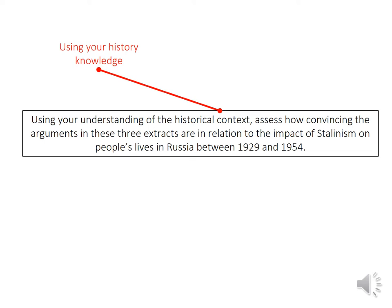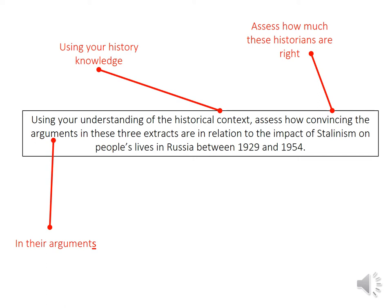When it says 'historical context,' it really means using your historical knowledge. When we're talking about 'convincing,' we're really saying making a judgment about how these historians are right or wrong. Note that it says 'arguments' — these extracts make multiple arguments, and it's asking you to analyse how convincing each one of those arguments are. The last and most important bit is the focus of the question. As soon as you get to this question, grab your highlighter and highlight everything after 'in relation to,' so you're really focusing on that specific focus.